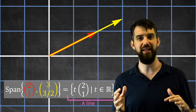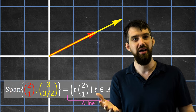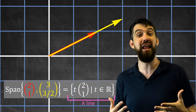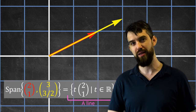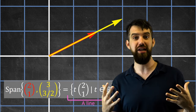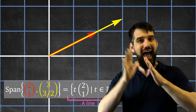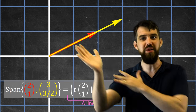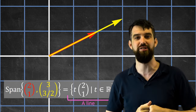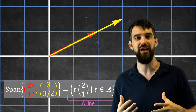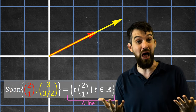But what about two vectors that overlap? If I have (2,1) and also the vector (3, 3.5) — which is just one-half times the original (2,1) — then any linear combination just stretches vectors along the same line. The span of (2,1) and (3, 3.5) is just all multiples of (2,1): it's just a line.